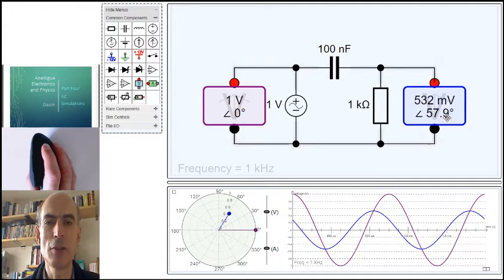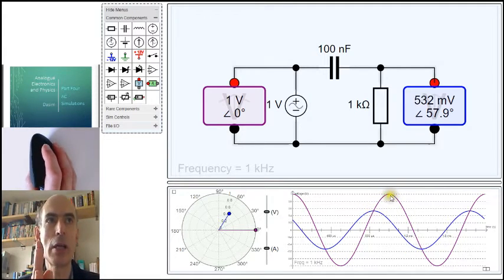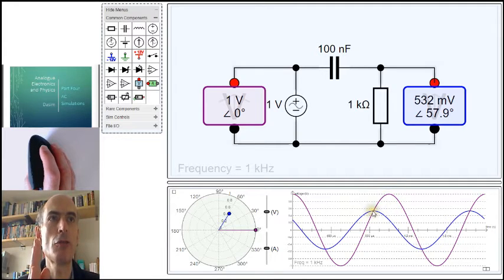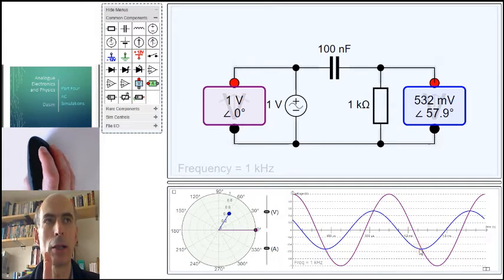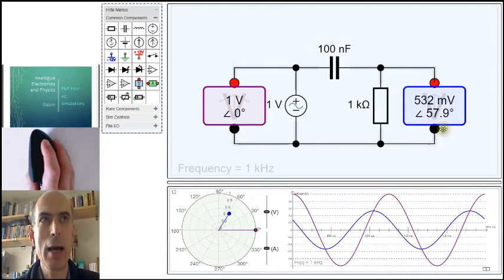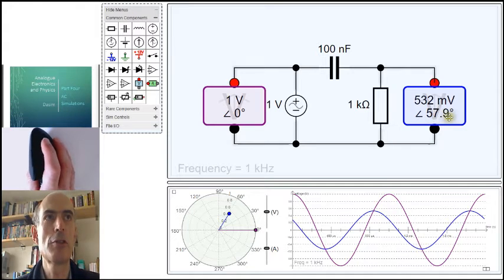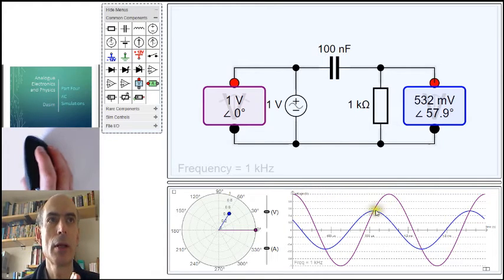The 57.9 degrees indicates how far the blue is ahead of the purple. It reaches its maximum value before the purple reaches its maximum value, its minimum value before the purple reaches its minimum value. We represent that by a positive angle here, 57.9 degrees. That's around about one-sixth of an entire cycle ahead.